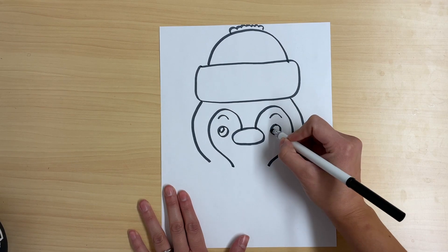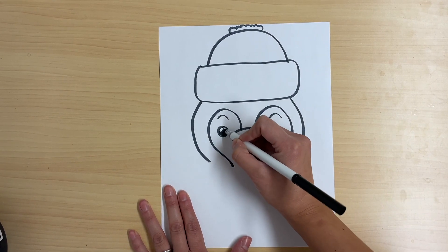Then I'm going to draw two little circles inside the eyes and color the bigger part in.